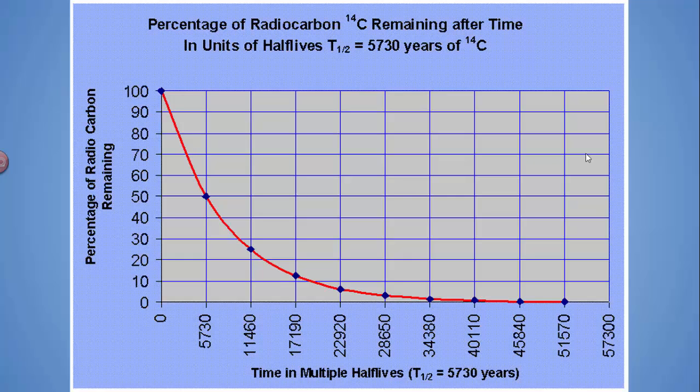If we plot this, the amount or percentage of carbon remaining versus the time, you get a curve. And eventually, you'll get down to zero, but it takes a very long time. The fewer atoms you have, the fewer decays you have, and then it takes the same amount of time to get down to half.